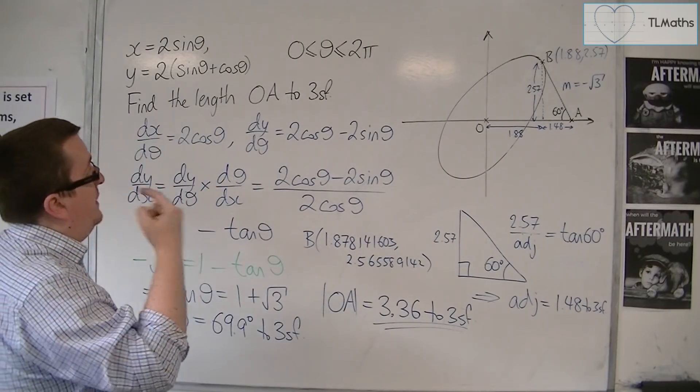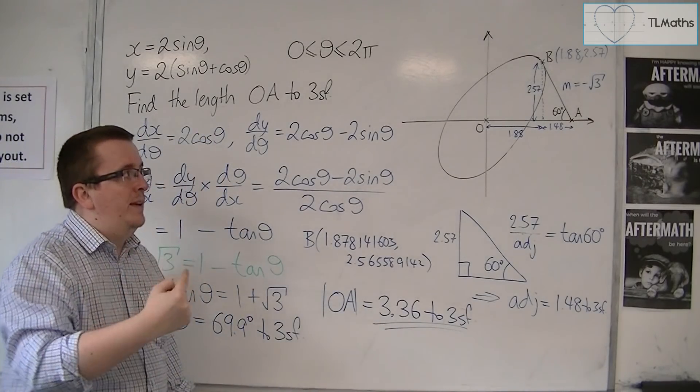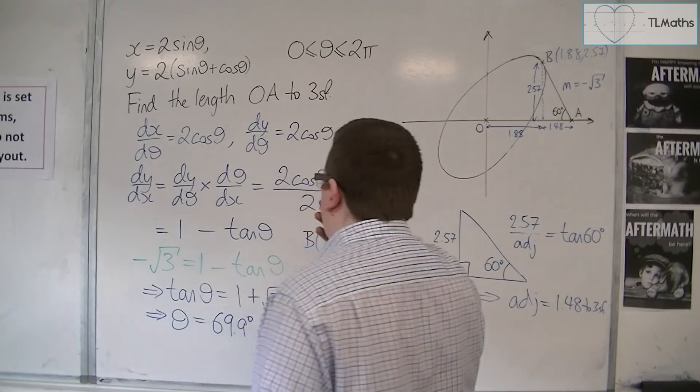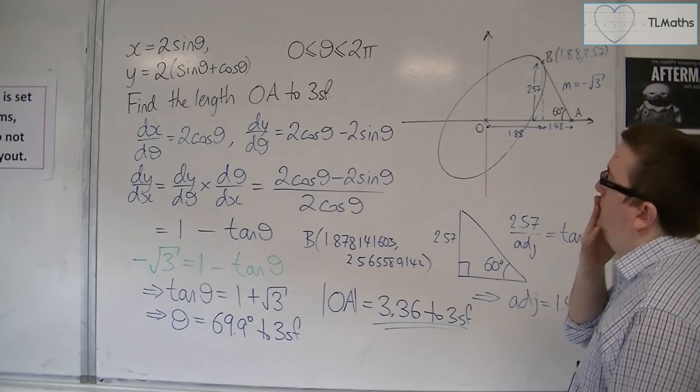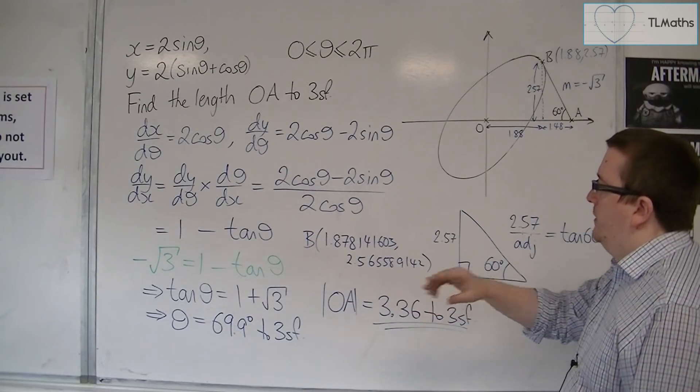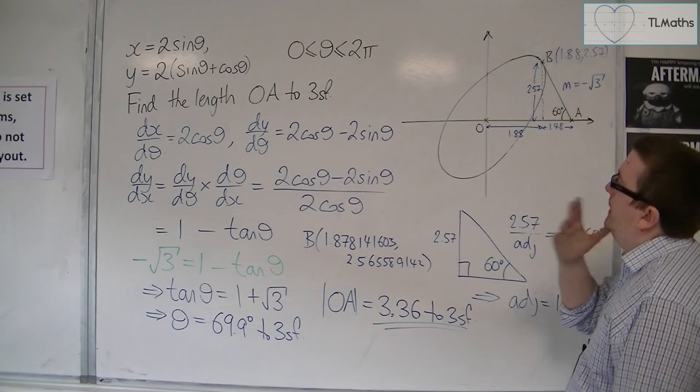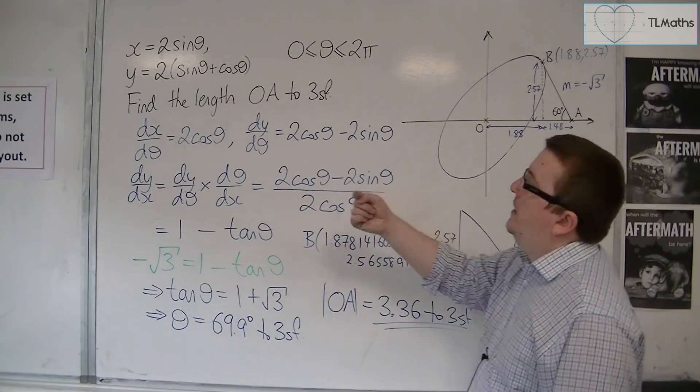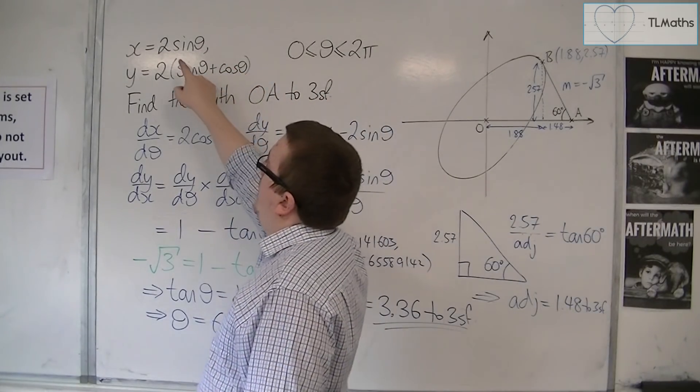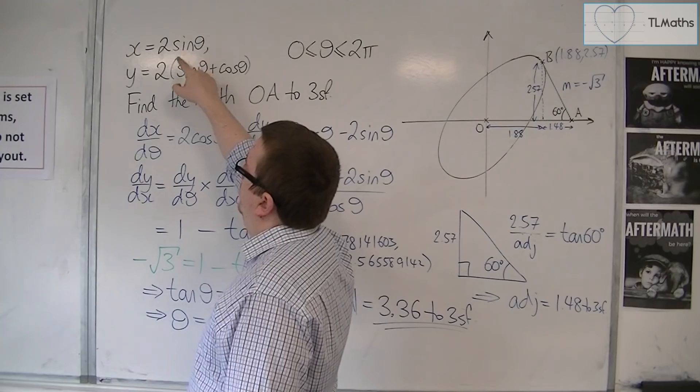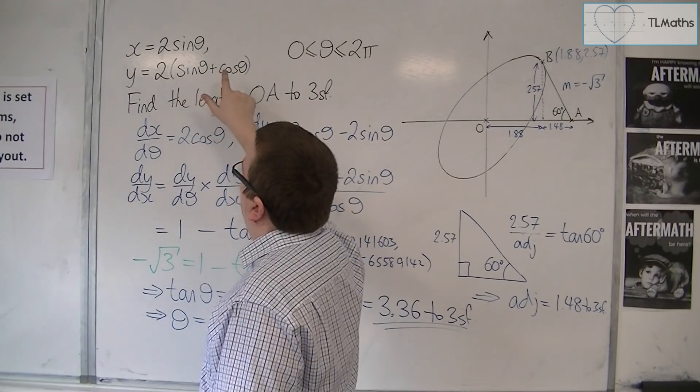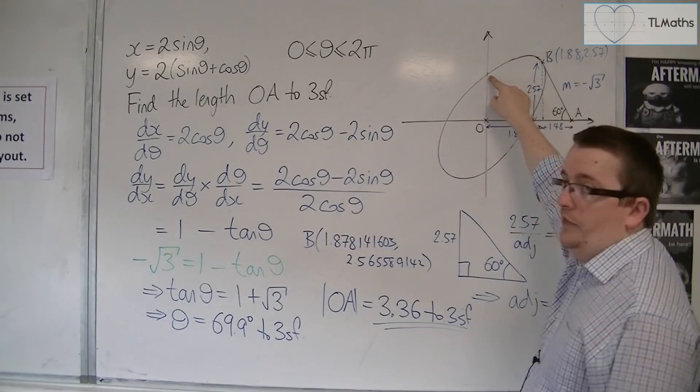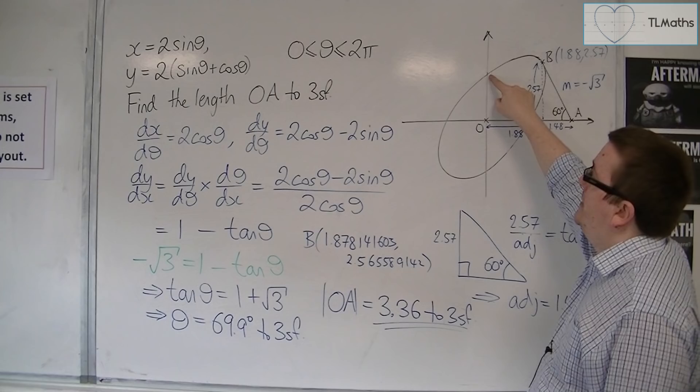Inherently, you should have a think before you start these questions about what's happening as theta changes. You know that theta is going from 0 to 2 pi. When theta is 0, you get 2 lots of 0 and 2 lots of 0 plus 1, so 0, 2. The curve starts there at 0, 2 when theta is 0.